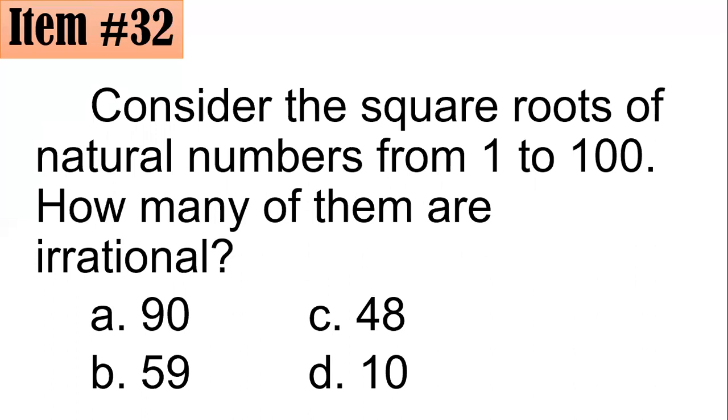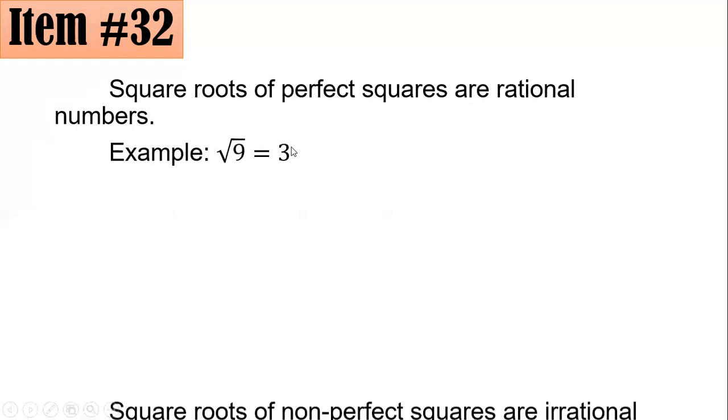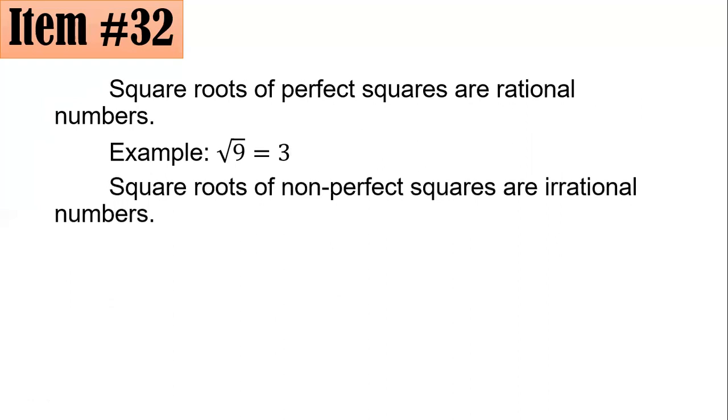Item 32. Consider the square roots of natural numbers from 1 to 100. How many of them are irrational? Is it 90, 59, 48, or 10? Now remember this: square roots of perfect squares are rational numbers. Example, if you have the square root of 9, that's 3. But square roots of non-perfect squares are irrational numbers. Example, if you have the square root of 14, that's approximately 3.74.